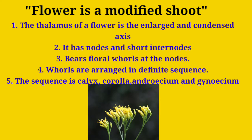The second point is that the flower has nodes and very short internodes, similar to the vegetative shoot. Since the thalamus is the modified stem from where the flower develops, it will bear nodes and internodes where all the floral parts — that is, calyx, corolla, androecium, and gynoecium — will be attached.